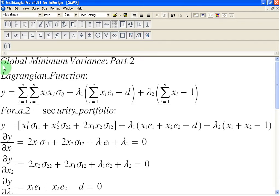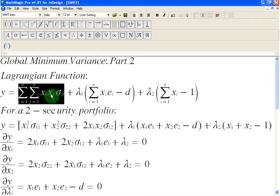Ladies and gentlemen, welcome to this screencast in which we are going to continue to talk about the global minimum variance. From the first screencast, you may remember that we had set up our Lagrangian function. We had given it a name Y and it contained three items. This item was our objective function, the portfolio variance that we wanted to minimize.